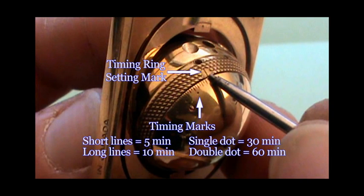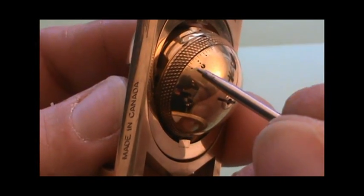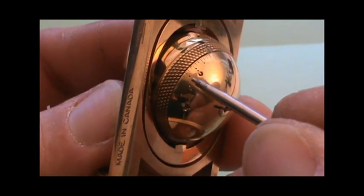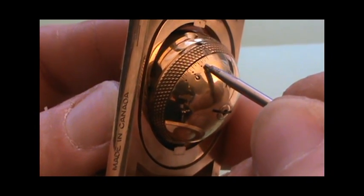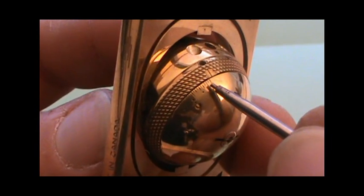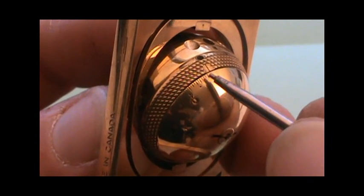This picture shows the timing ring setting mark as well as the timing marks located on the bottom of the gimbal. The small short lines are 5 minutes, the longer lines are 10 minutes, and the dots are 30 minutes. A double dot is 60 minutes.